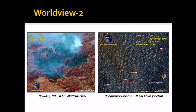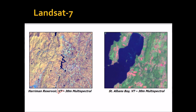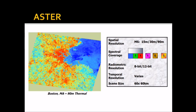QuickBird has 0.5-meter panchromatic and 0.5-meter multispectral. Landsat 7 has pan at 15 metres, with multispectral resolution ranging from 30 to 60 up to 120 metres. Radiometric resolution is 8-bit and the scene size is 185 by 185 kilometres — very good coverage.